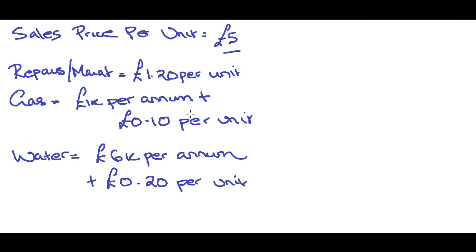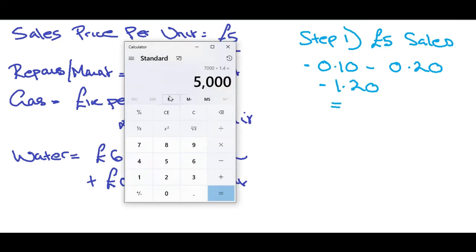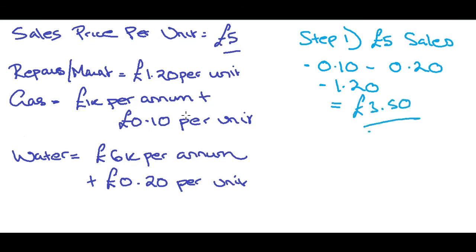So let's go to step one. Work out the contribution. So that's the sales of £5 per unit. Minus 0.10 for gas. Minus 0.20 for water. And also £1.20 for repairs and maintenance. Let's get our trusted calculator out. So £5 minus 0.1 minus 0.2 minus 1.2. That gives us £3.50 contribution per unit.